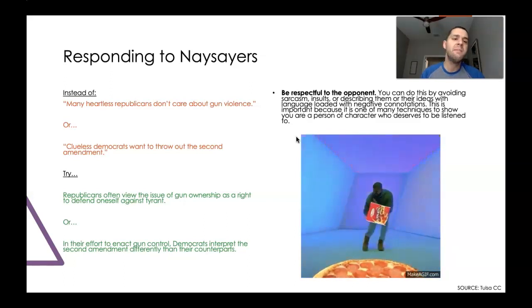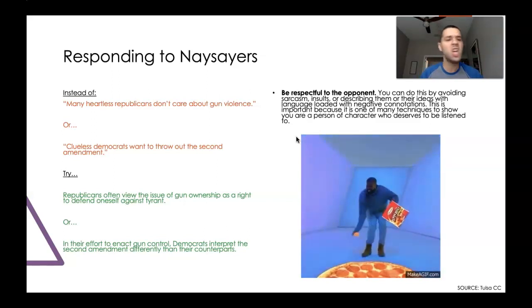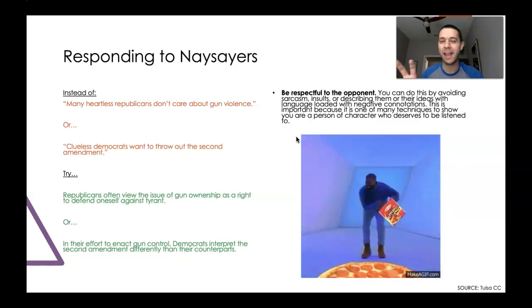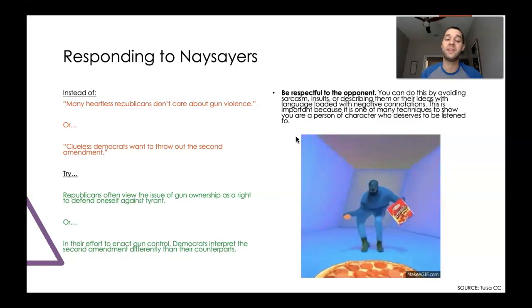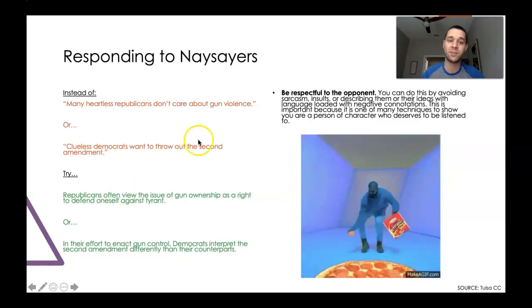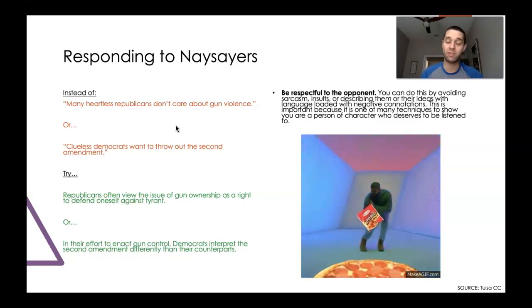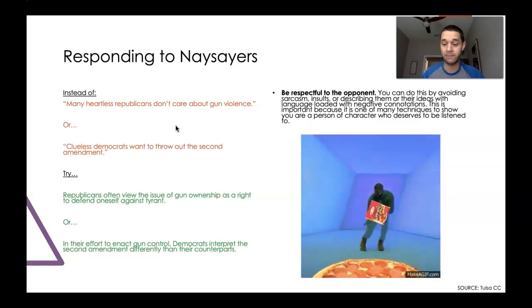Here are some negative examples: 'Many heartless Republicans don't care about gun violence.' Or, 'Clueless Democrats want to throw out the Second Amendment.' Try this instead — it's saying the same types of sentiments but in a respectful way: 'Republicans often view the issue of gun ownership as a right to defend oneself against tyranny.' Or, 'In their effort to enact gun control, Democrats interpret the Second Amendment differently than their counterparts.' See how that is actually respectful as opposed to insulting? That's going to make you much more persuasive, even when writing about something incredibly controversial.